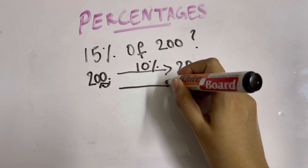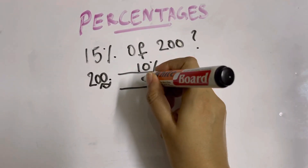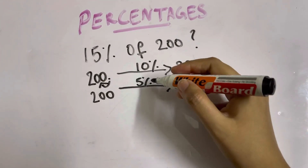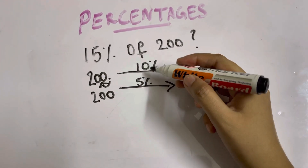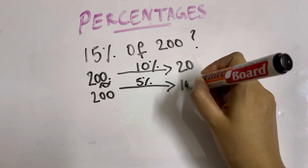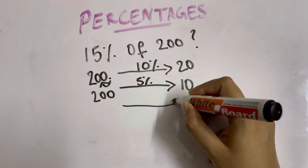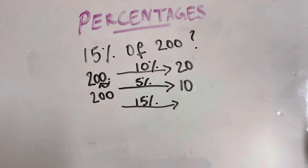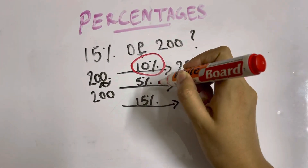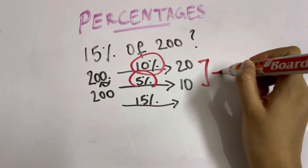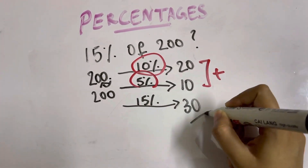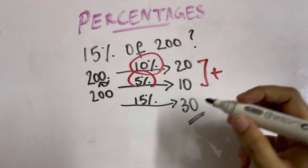Next, we are going to find out 5% of 200. 5% is just half of 10%, so half of 20 is 10. What is 15%? 15% is just 10% plus 5%, so 20 plus 10 is 30. 30 is your answer.